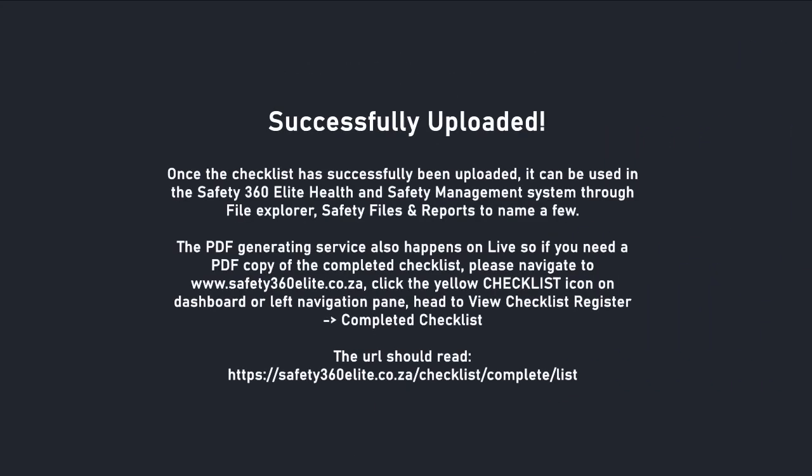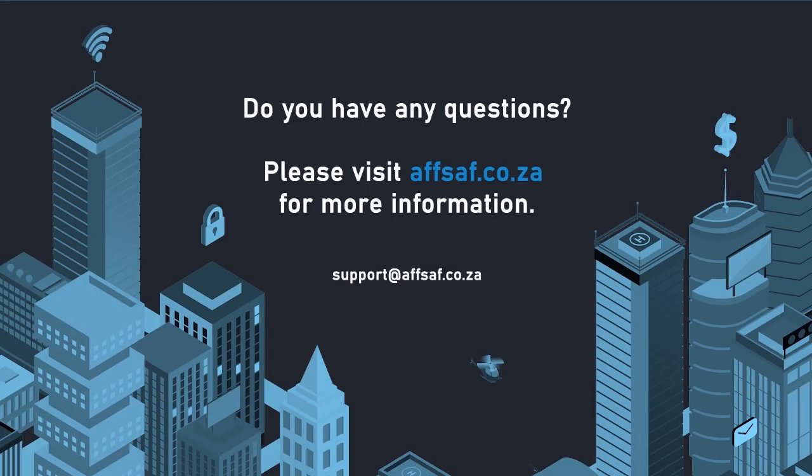Once the checklist has successfully been uploaded, it can be used in the Safety 360 Elite Health and Safety Management System. A PDF copy of the completed checklist is also generated. For this, go to the web app and click the yellow checklist icon, then click on View Checklist Register and then Completed Checklist to download your PDF. Please visit our website or email us for more information.